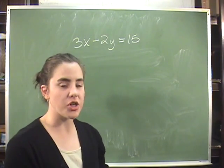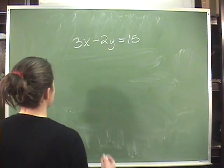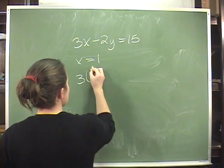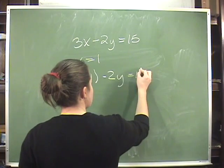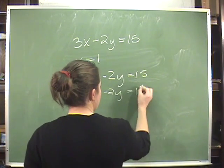Then those two numbers function as a pair of numbers that is the solution to this problem. For instance, if you let x equal 1, then 3 times 1 minus 2y equals 15. 3 minus 2y equals 15.